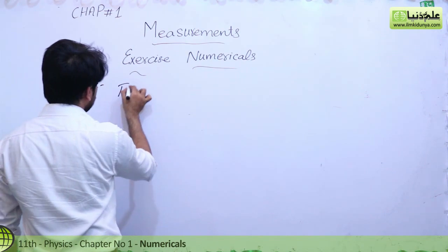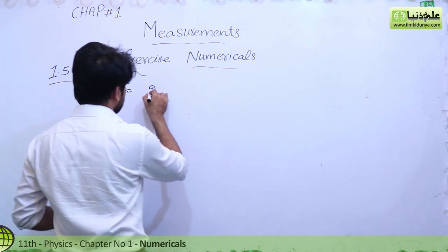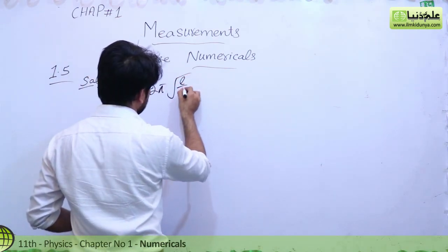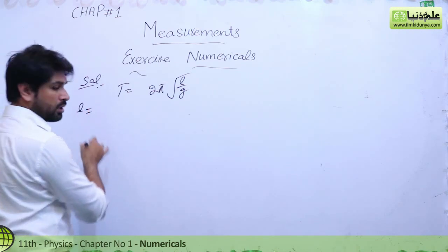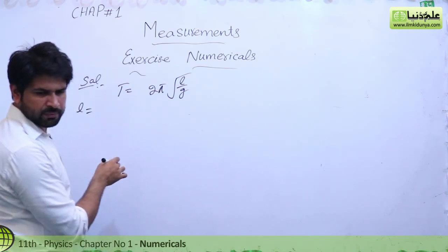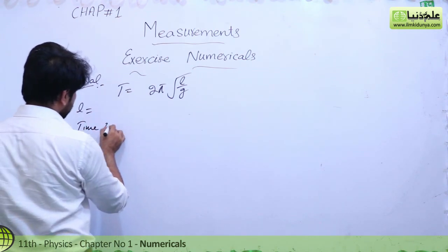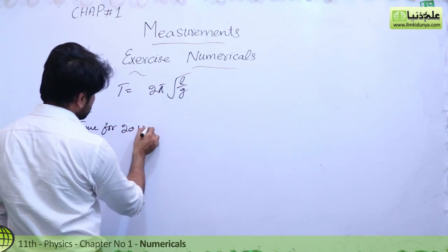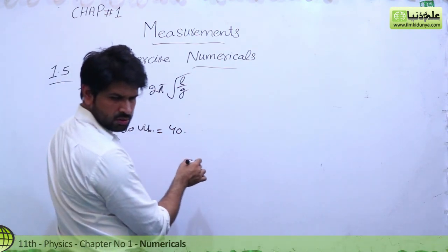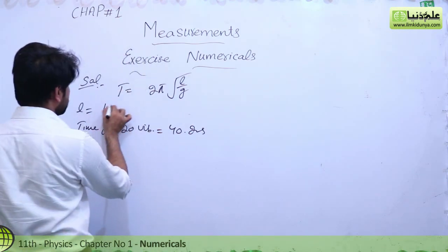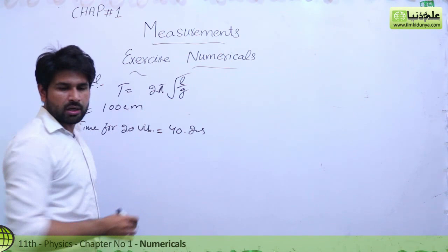It is a quite lengthy numerical. The formula given is T = 2π√(l/g). The length of the pendulum is given, time for 20 vibrations is given as 40.2 seconds. Length is given as 100 centimeters.